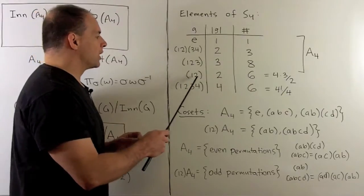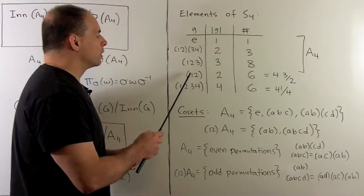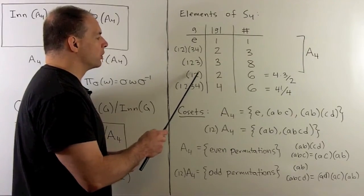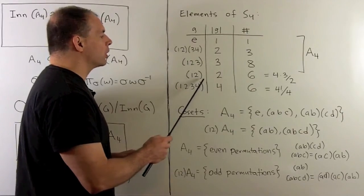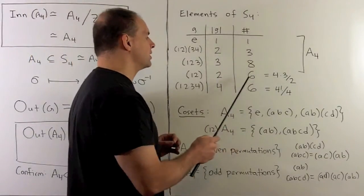How many two cycles do we have? This is just counting. I have four labels for where the one can go, three labels for where the two is once I choose the first one. But note if I switch the order I have the same two cycle, so four times three divided by two is six.